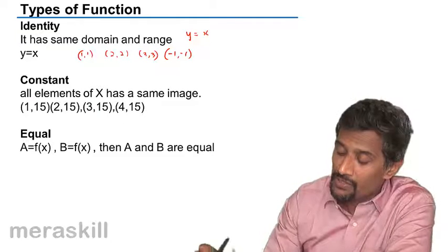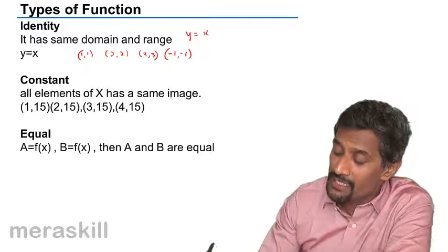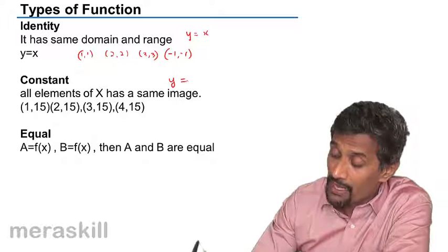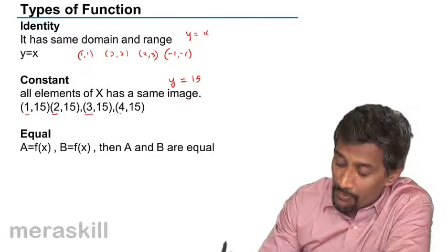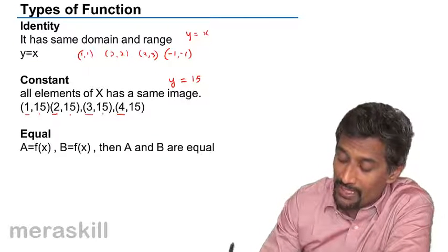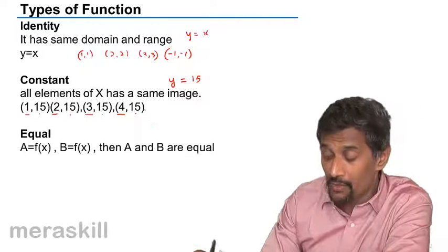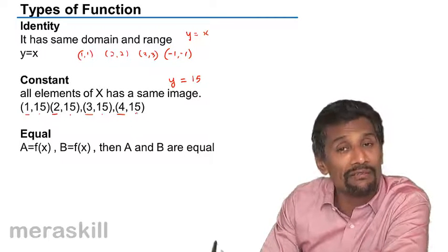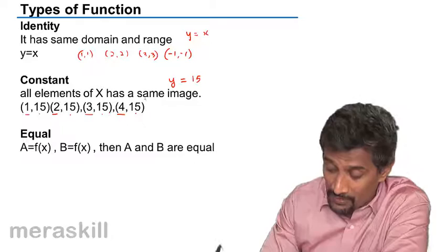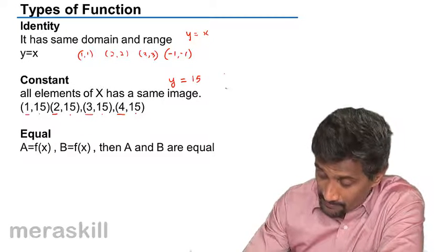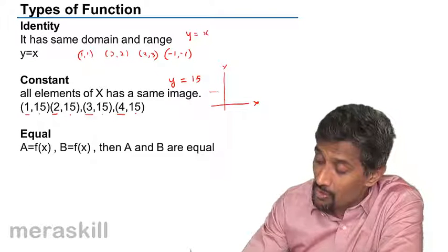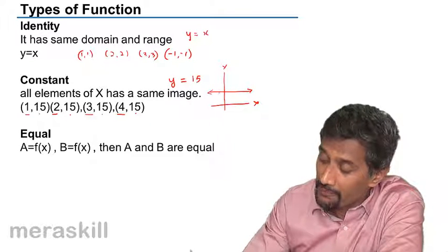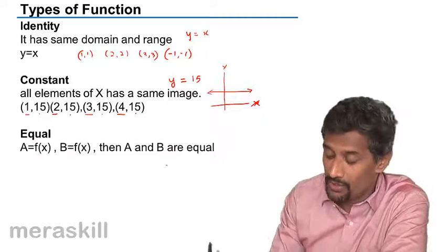For a constant function, all elements of X have the same image. An equation of the form y = 15 is an example. Whatever the various values of the domain, the value of the range remains the same. For a constant function the range always has only one value. On a graph, a constant function will be a line parallel to the X axis.